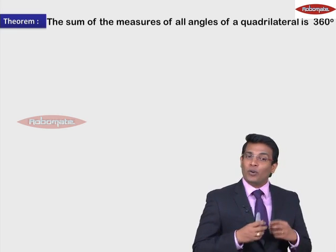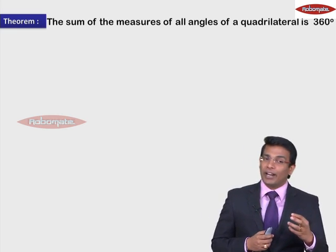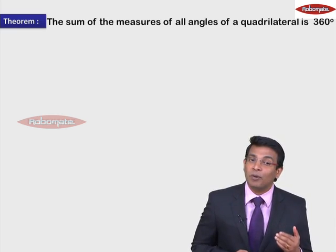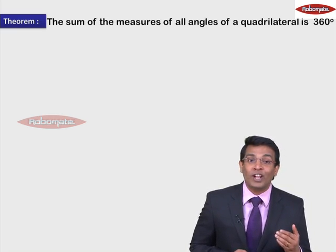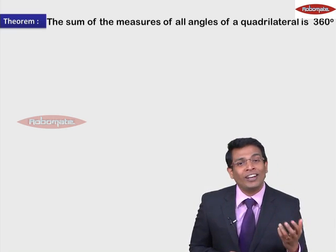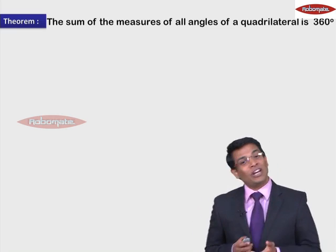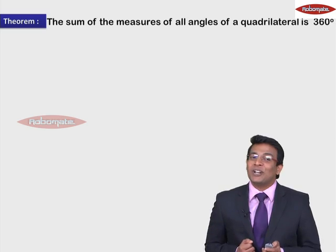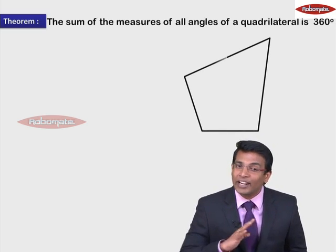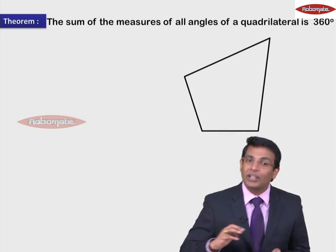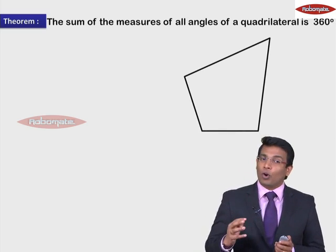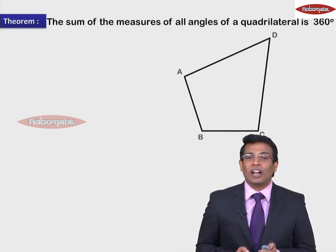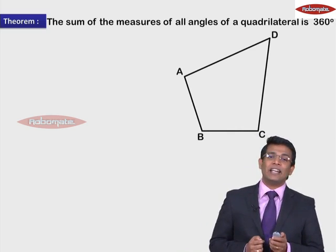The moment you have a statement, the first thing is you need to draw a figure. It says sum of the measures of all angles of a quadrilateral, so first we need to have a quadrilateral. Let's draw a quadrilateral — it's any four-sided closed figure. You have a quadrilateral, you need to name it. So let's name the quadrilateral as A, B, C, D.